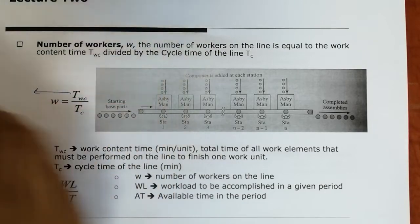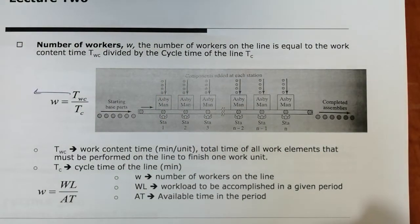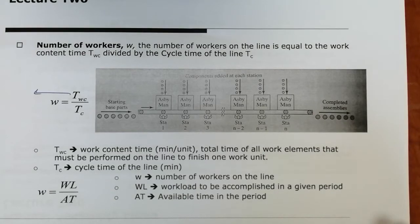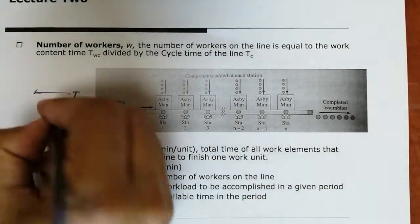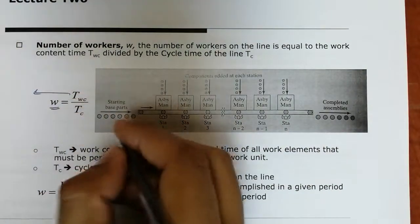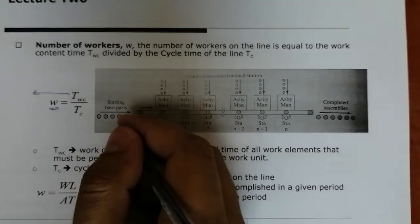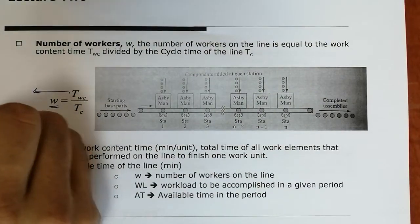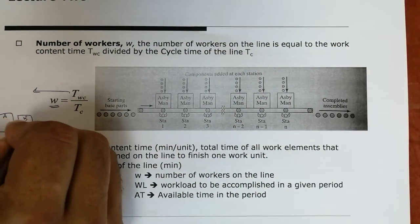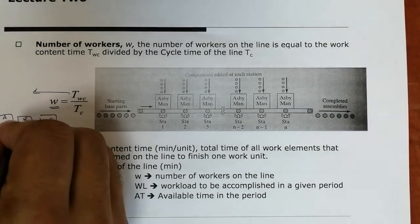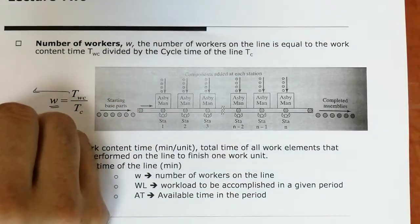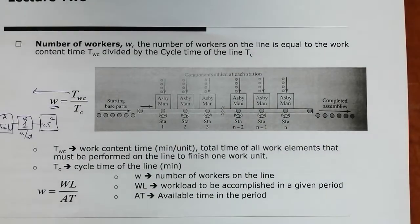TWC is the summation of all processing steps for the first unit — how much time is needed to do the job. The number of workers or stations is TWC divided by cycle time, which is usually the bottleneck. For example, if we have steps A, B, C with times of 1 minute per unit, 0.5, and 0.5 minutes per unit respectively, the bottleneck is 1 minute per unit at machine B.